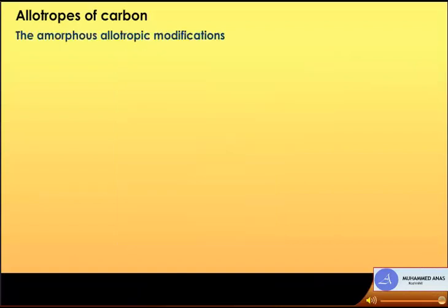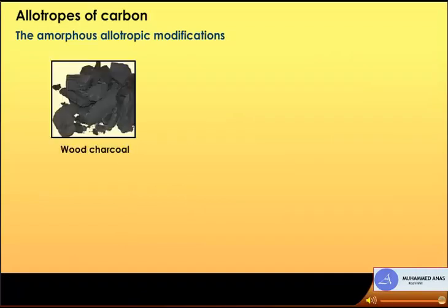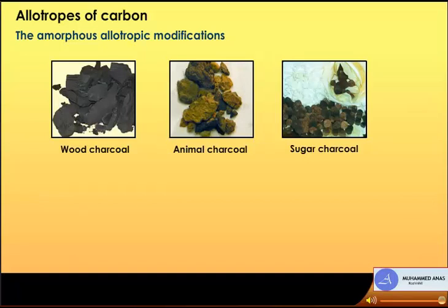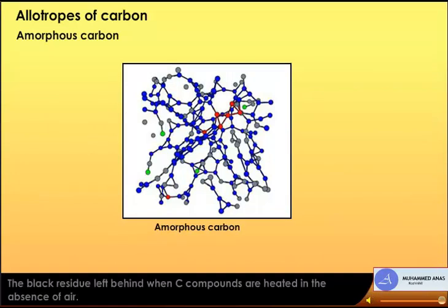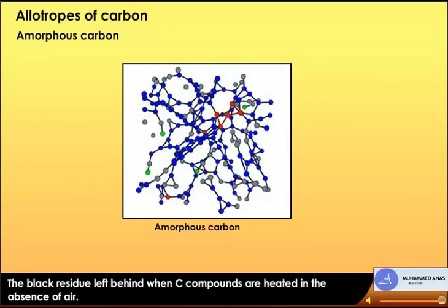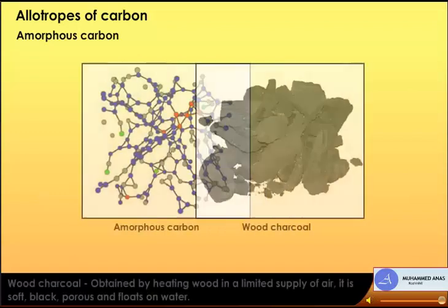The amorphous allotropic modifications of carbon include wood charcoal, animal charcoal, sugar charcoal, lamp black, and gas carbon. Amorphous carbon is the black residue left behind when carbon compounds are heated in the absence of air.